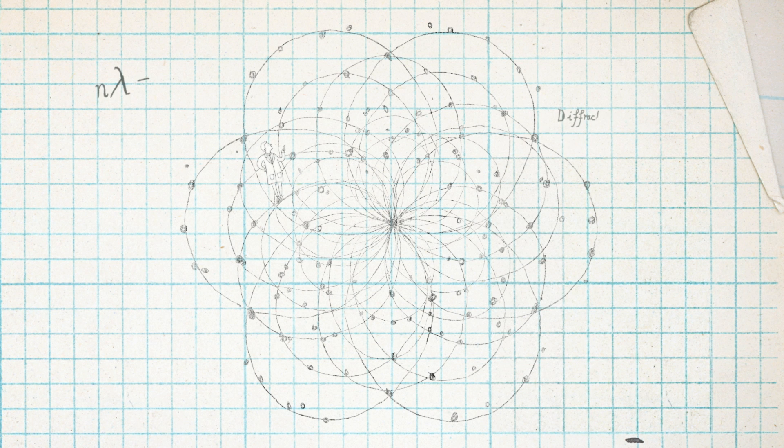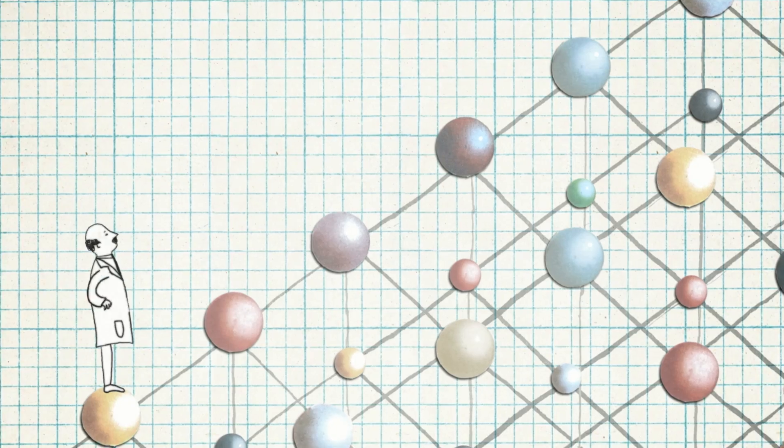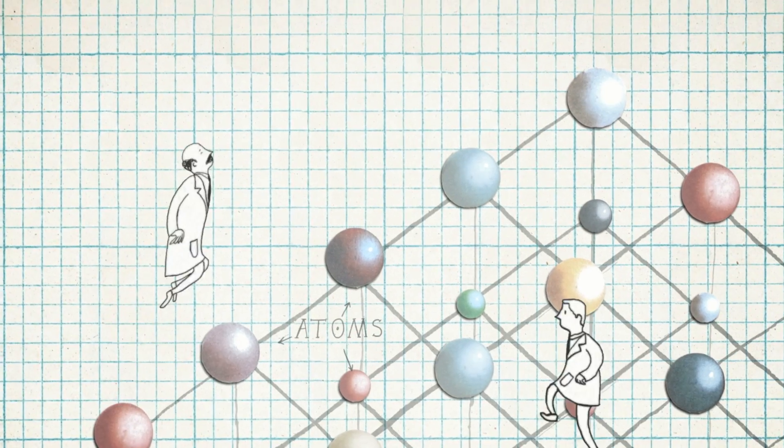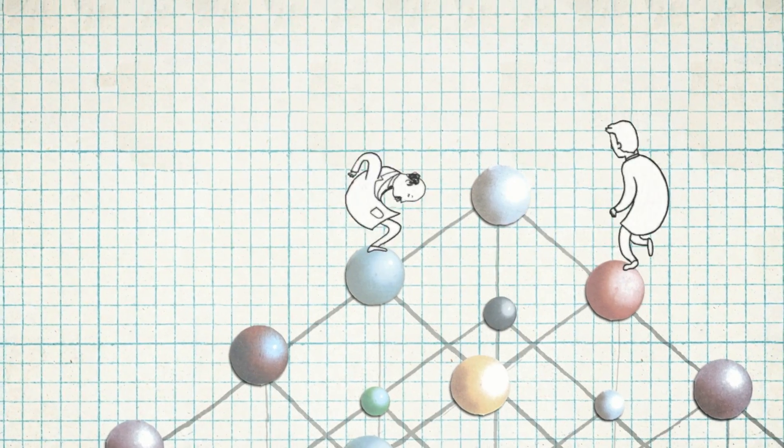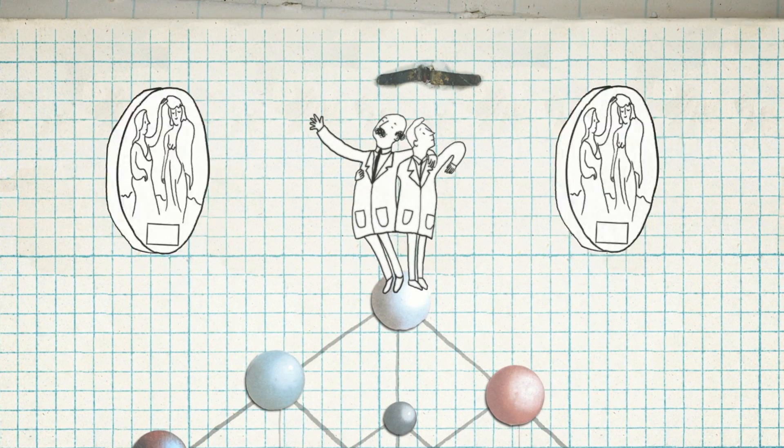The equation he developed, Bragg's law, made it possible to work out how the spots in the diffraction pattern are related to the specific arrangement of atoms in the crystal. Two years on and the Braggs were awarded the Nobel Prize. Impressive stuff!